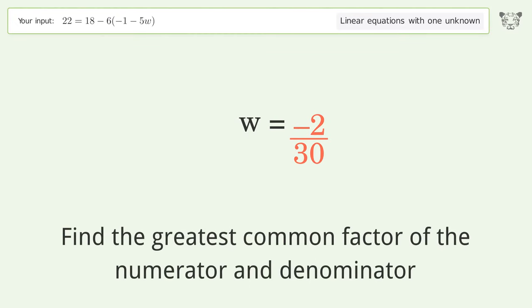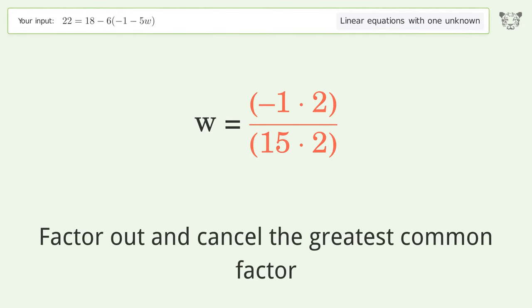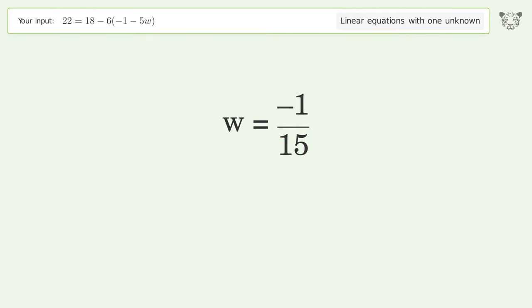Find the greatest common factor of the numerator and denominator. Factor out and cancel the greatest common factor. The final result is w equals negative 1 over 15.